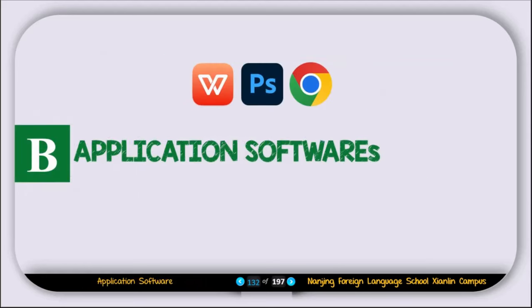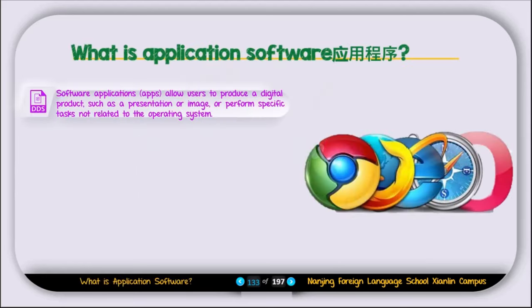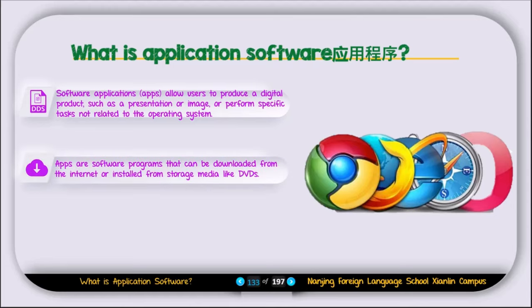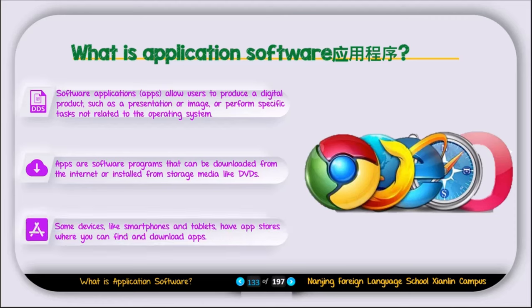Now let's talk about application software. Software applications, or apps, allow users to produce a digital product such as a presentation or image, and perform specific tasks not related to the operating system. Apps are software programs that can be downloaded from the internet or installed from storage media. You can install apps from the internet, download them from a website, or use DVDs. For example, games are also software and are usually available on DVD disk. Some devices like smartphones and tablets have app stores where you can find and download apps.